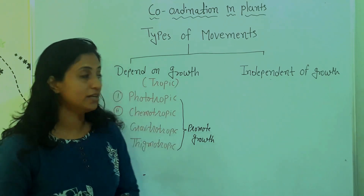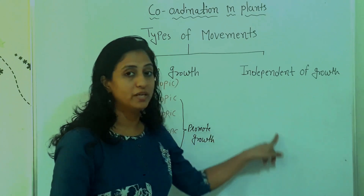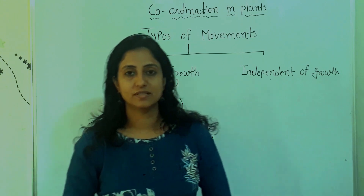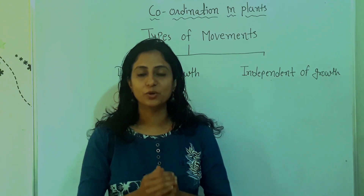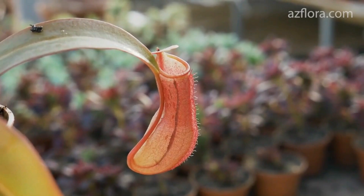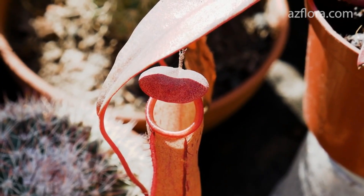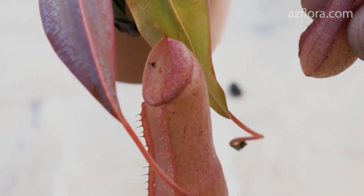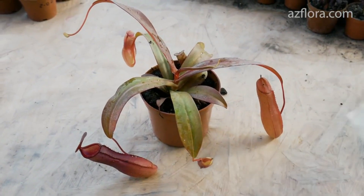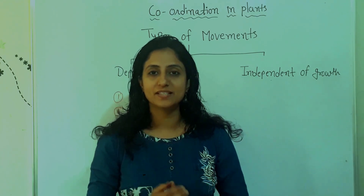Now we come to the next type of movement, which is independent of growth. These movements are not related to the growth of the plant. The first example of a growth-independent movement is the pitcher plant. The pitcher plant is a carnivorous plant. Its modified leaves are known as pitfall traps. Its cavity is filled with digestive liquid, and the plant attracts and traps its prey with nectar. This is how movement takes place in the pitcher plant.